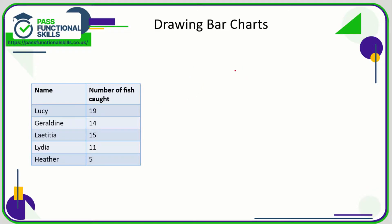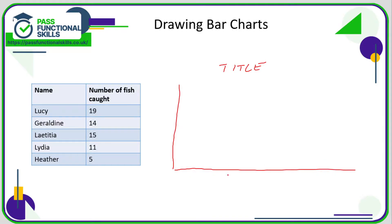The first thing we're going to do is have a title for the bar chart — the title would probably be 'Total number of fish caught by five local fishermen'. You're going to have an x-axis and a y-axis; obviously you'll use a ruler for this. On the x-axis (the horizontal) I'm going to put in the names of the fishermen, and up the side I'm going to have the number of fish caught.